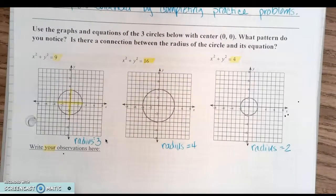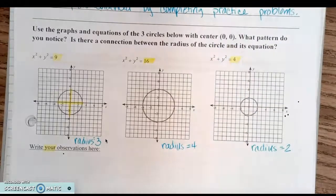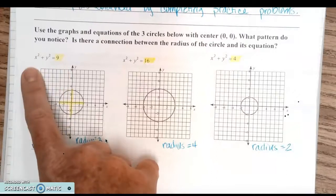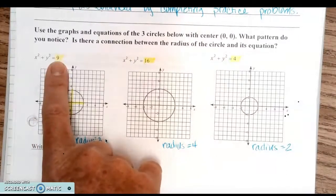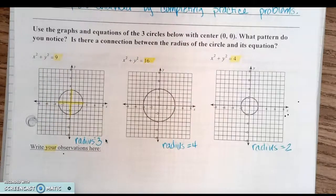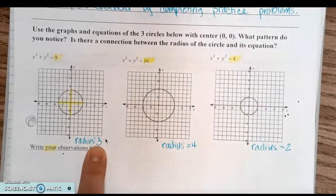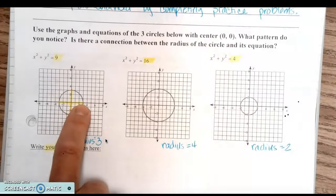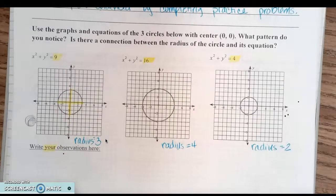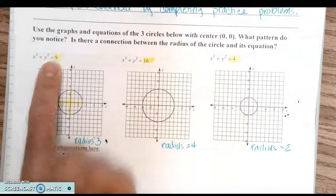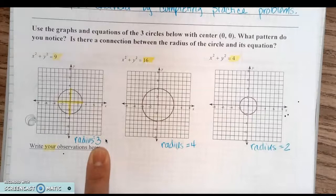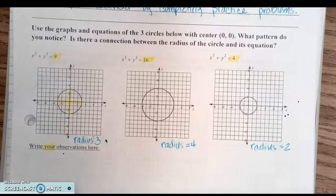The directions say: use the graphs and equations of the three circles below with center (0, 0). What pattern do you notice, and is there a connection between the radius and its equation? All three are centered at (0, 0) — we're not moving them yet, just looking at the radius. For the first circle on the left, the equation is x² + y² = 9. If there's a 9 here and the radius is 3, you can count it out: one, two, three. What do you notice between the 9 and the 3? Three times three — squaring!